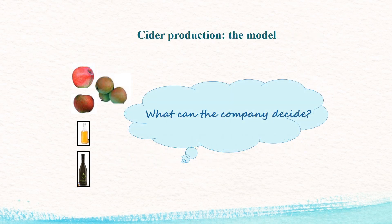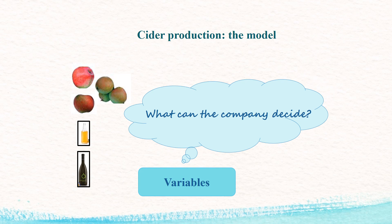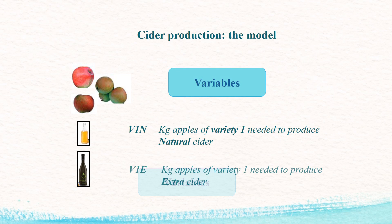Have you understood this decision-making problem? Which are the alternatives of the company? What can they decide? What the company can decide represents the variables of the model, which are the unknowns. Pause the video now and propose the variables with a clear definition, then continue. The company can decide how many kilograms of apples to buy of each variety and their allocation to each cider type.